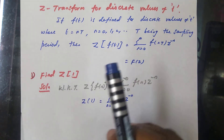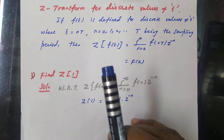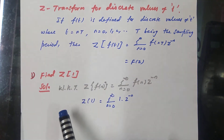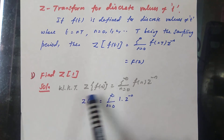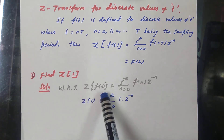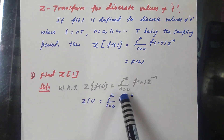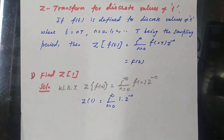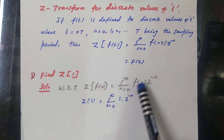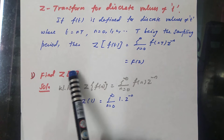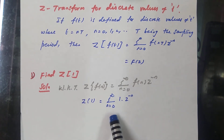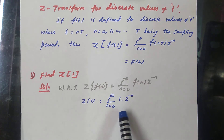Now we will see a first very basic problem: find the Z transform of 1. We apply the definition: Z of f of n equals sigma from n equal to 0 to infinity of f of n times z to the power minus n. Here f of n is nothing but 1, so we write Z of 1 equals sigma from n equal to 0 to infinity of 1 times z to the power minus n.